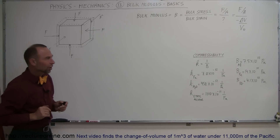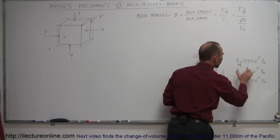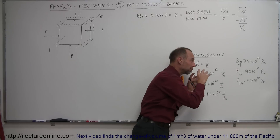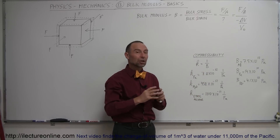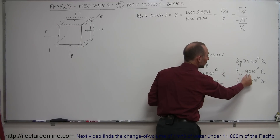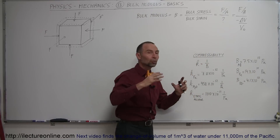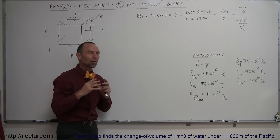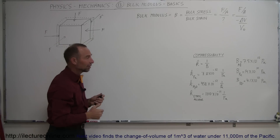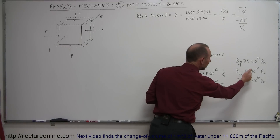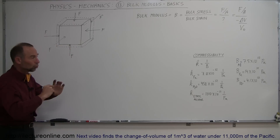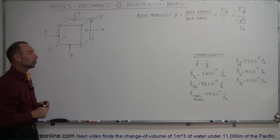The bulk modulus tells us how much pressure is required to achieve a certain volume change. The greater the number, the more pressure you need to achieve the same volume change. For example, for iron you need almost twice as much pressure as you would for aluminum to achieve the same volume change. Compared to lead, iron requires more than three times as much pressure to produce the same volume change.